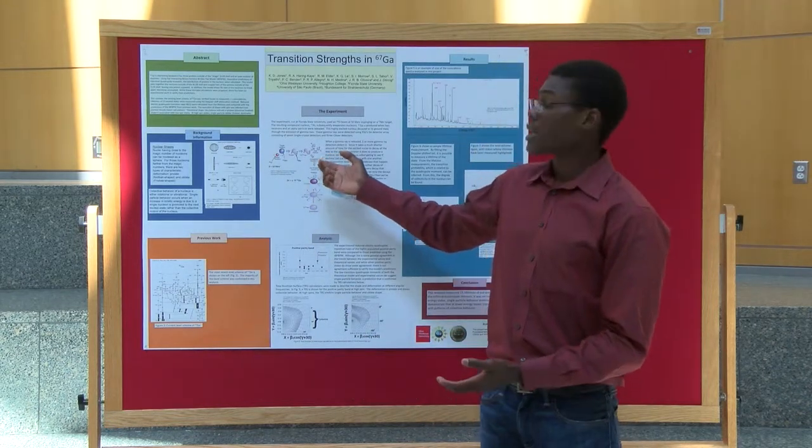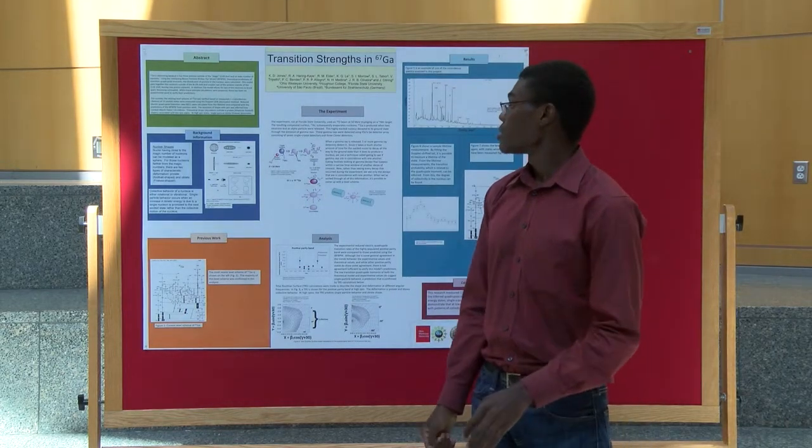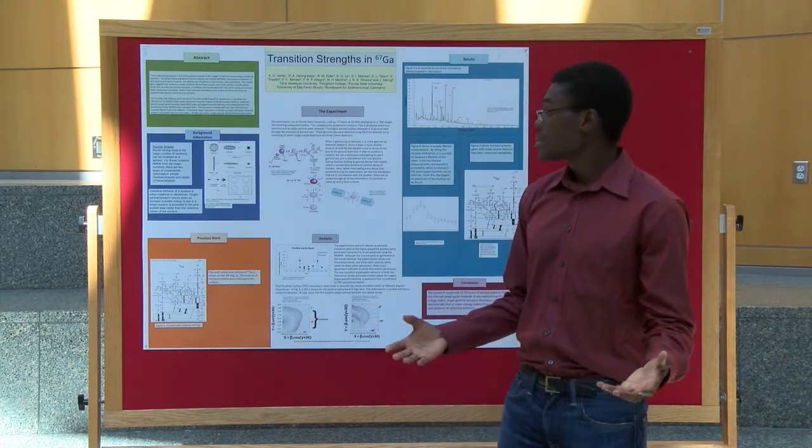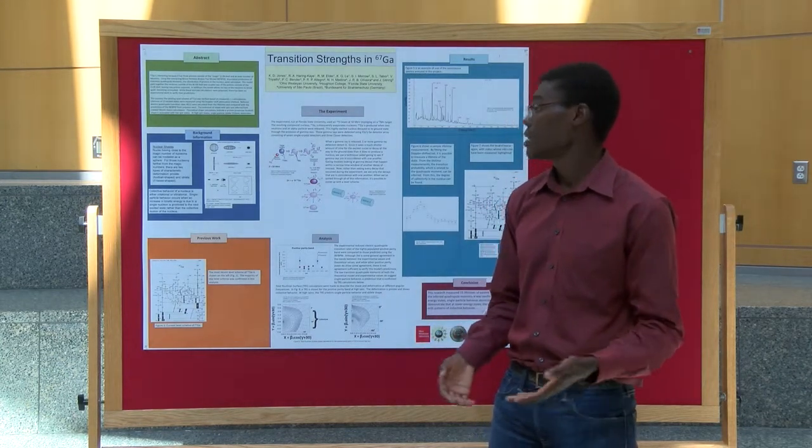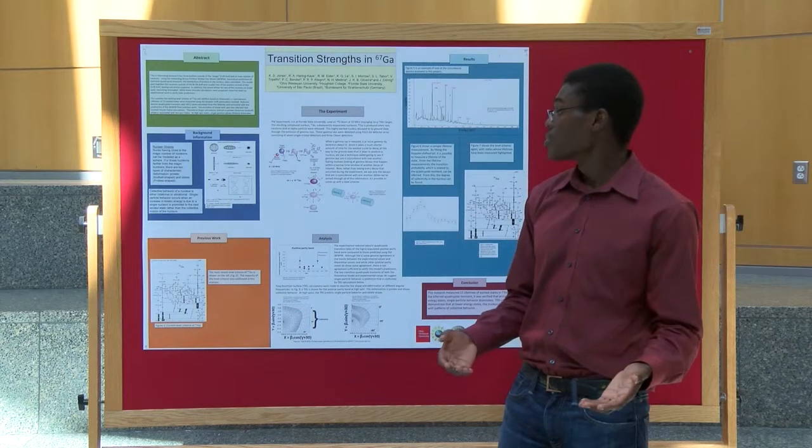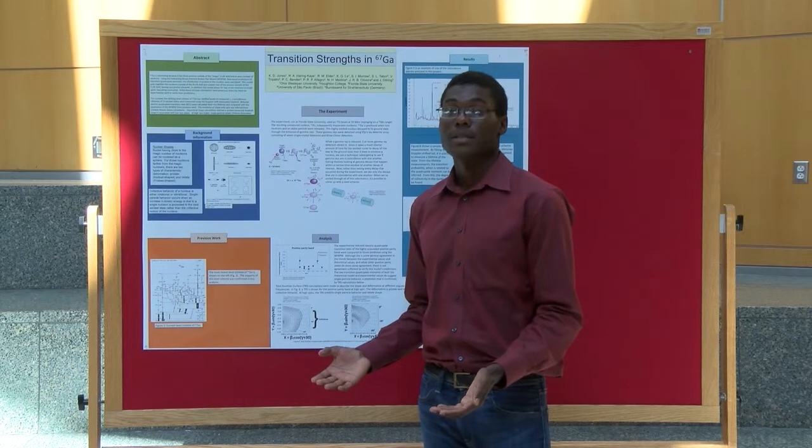That created a fusion product of arsenic 73, which evaporated in light particles. When two neutrons and an alpha particle, which contains two neutrons and two protons, was ejected, gallium 67 was produced at excited states.